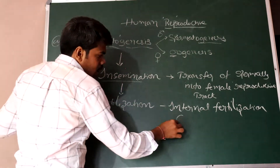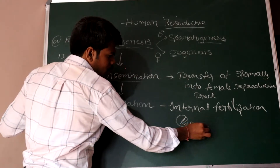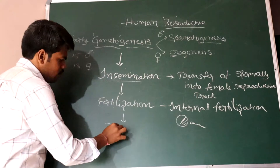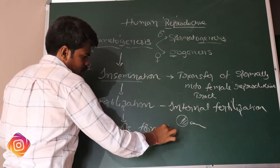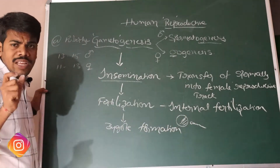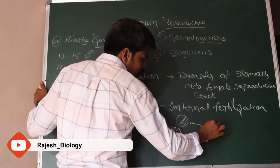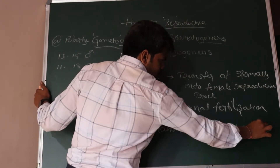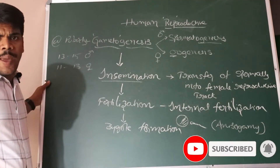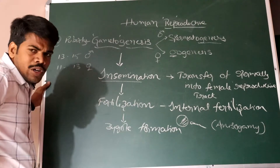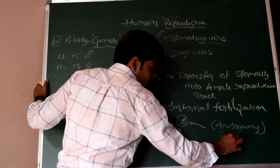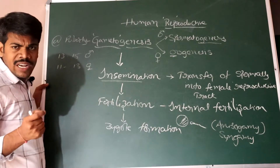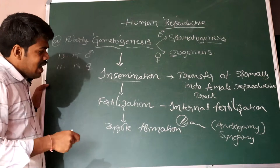During fertilization, two gametes — the ovum and the sperm cell — are fused to form the zygote. If you observe these two gametes, the female gamete is bigger than the male gamete, so this type of fusion is called anisogamy. It is also called syngamy, where 'syn' means fuse — the gametes fuse together. This internal fertilization results in zygote formation.